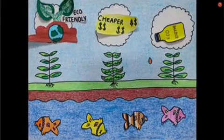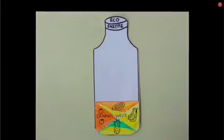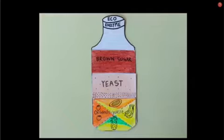A greener and cheaper alternative would be to use eco-enzymes, an organic fertiliser made from organic waste, yeast, brown sugar and water.